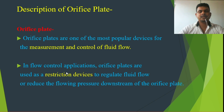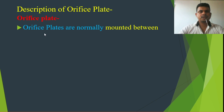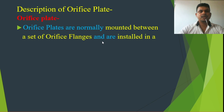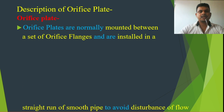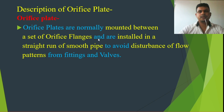Orifice plates are normally mounted between a set of orifice flanges and are installed in a straight run of smooth pipe to avoid disturbance of the flow pattern from fittings and valves. The orifice plate is installed in between the two flanges as I showed earlier, and it must be used on a long straight pipe run.